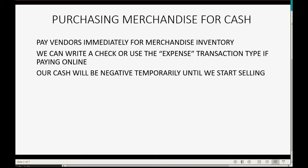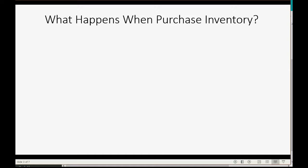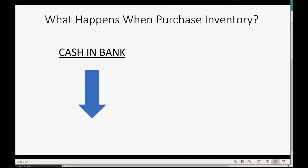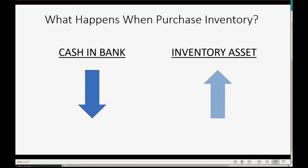That will help you understand the numbers a little bit better. So what happens in our QuickBooks records at the moment that we purchase inventory and pay for the inventory immediately? Well, the cash in the bank goes down and will become more negative, and the inventory asset that we discussed in a prior video will increase. That inventory asset represents the total money that we paid for all of the merchandise that we currently have.